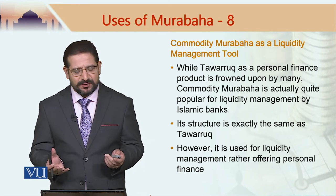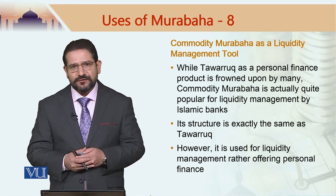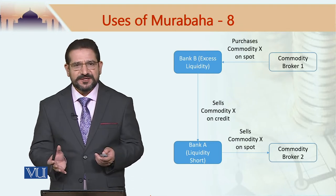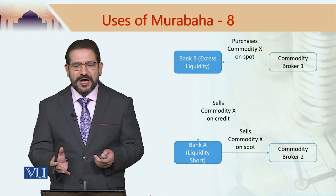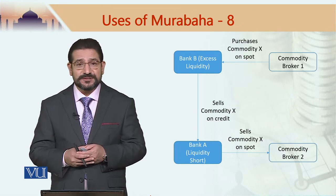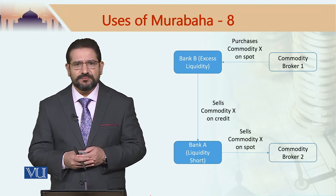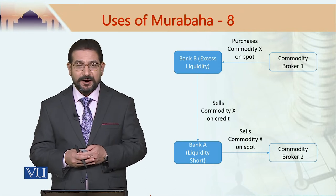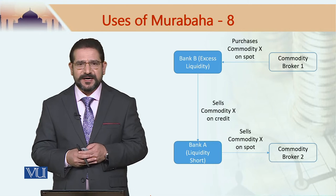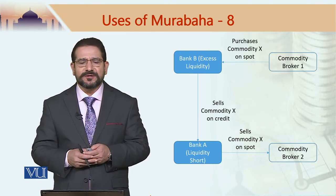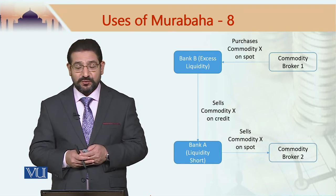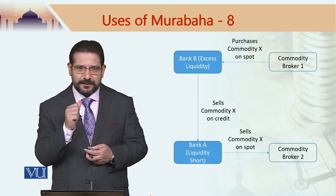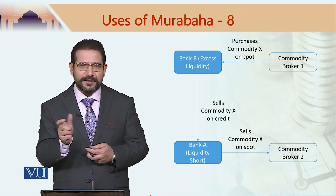Its structure is exactly the same as Tawarrukh; however, its use for liquidity management is considered a necessity. Let us look at the structure. This is a picture which should now be known to all of you, as I have used this diagram many times in the last few modules. Whenever someone talks about Tawarrukh or commodity murabaha, you should have these 4 pillars in mind: the customer, the bank, commodity broker 1, and commodity broker 2.